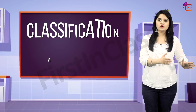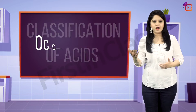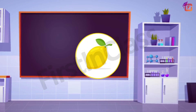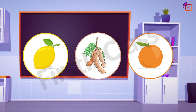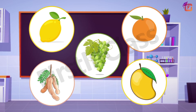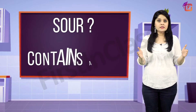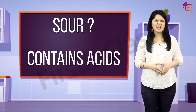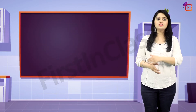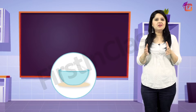Now in this video we are going to learn about the classification of acids on the basis of their occurrence. You would have tasted fruits like lemon, orange, tamarind, raw mango, and raw grapes. What is common in them? Well, these all are sour. Do you know why these fruits are sour? Because these all contain acids — that means acids are sour.